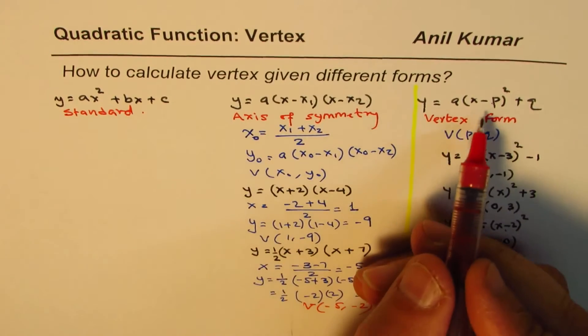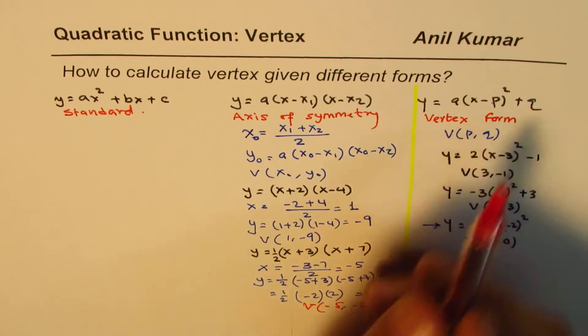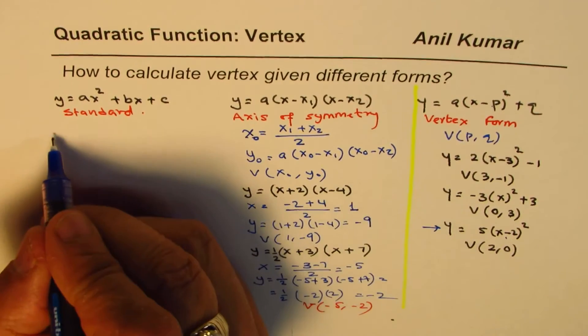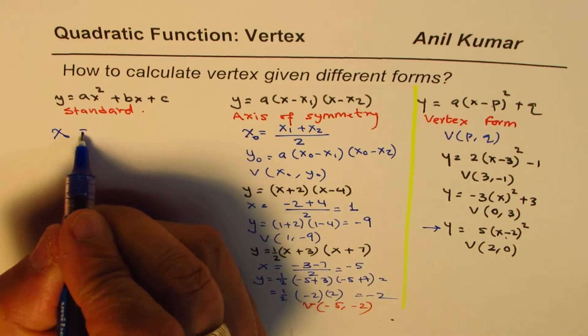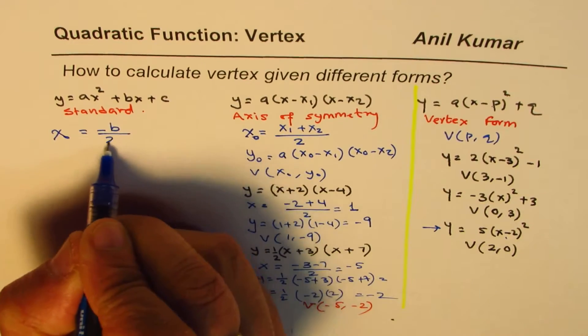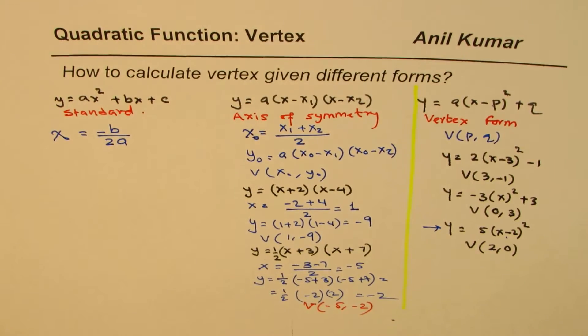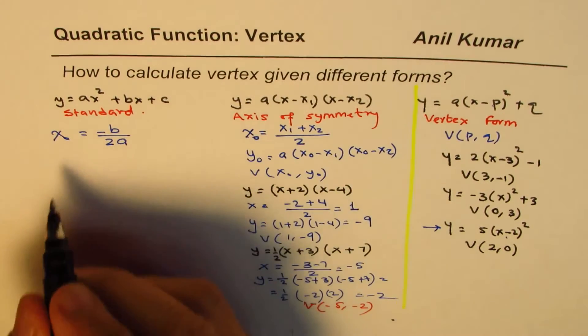Well the idea is you could do completing the squares. That's a long way to go. But the other point is you could find the x value of the vertex. Let me call x0 as minus b by 2a. And then substitute this value to find y value.